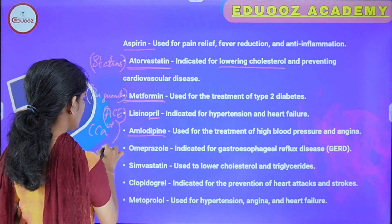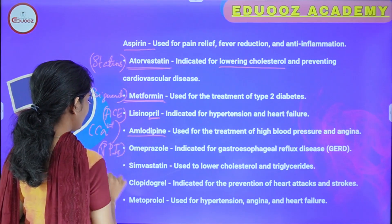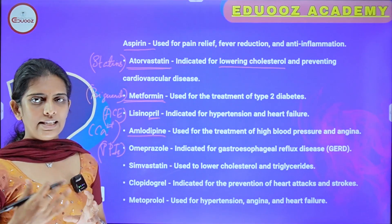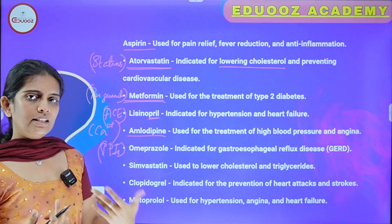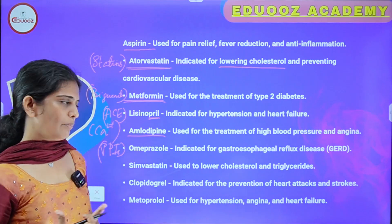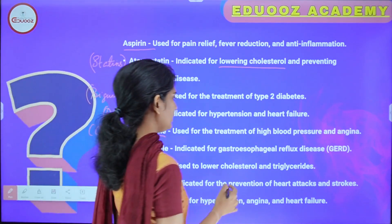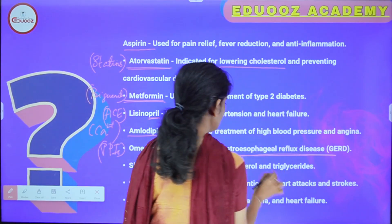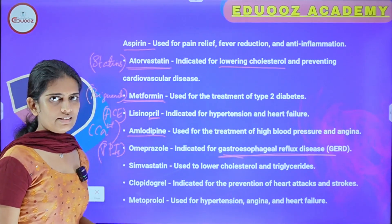Omeprazole is a proton pump inhibitor. The stomach lining has a proton pump — H+/K+ ATPase — which it inhibits. It is indicated for gastroesophageal reflux disease, GERD.